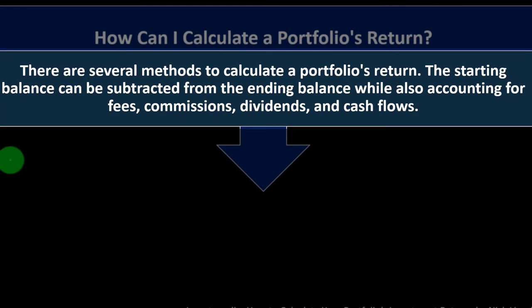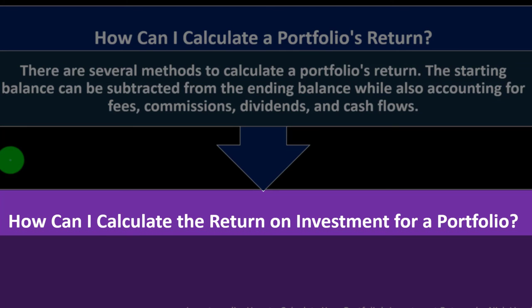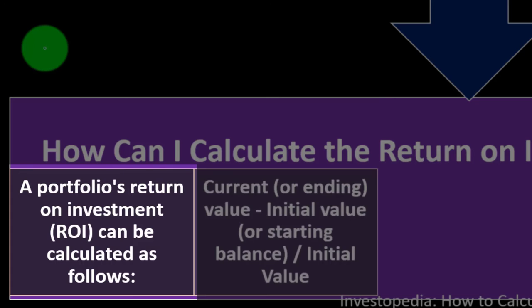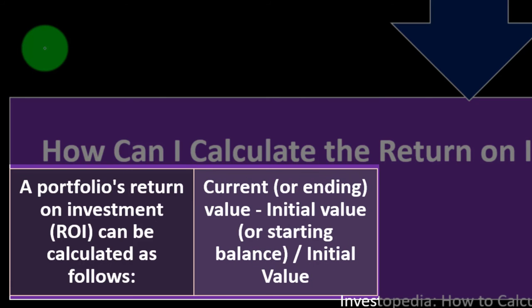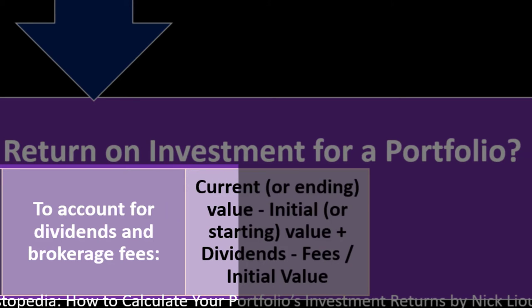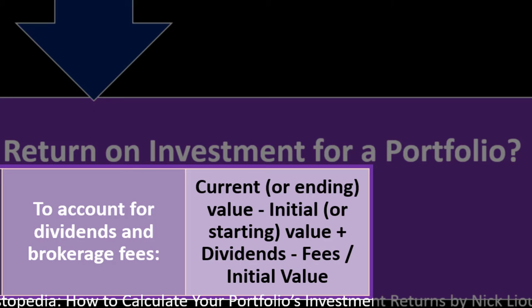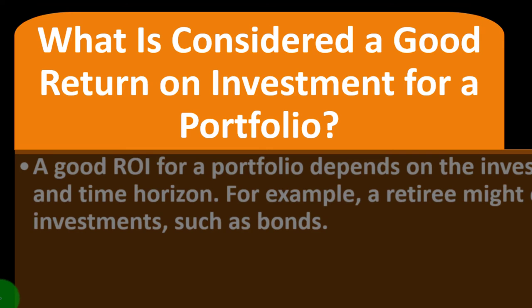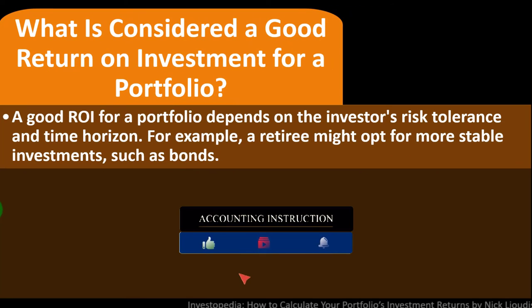How can I calculate a portfolio's return? There are several methods to calculate a portfolio's return. The starting balance can be subtracted from the ending balance while also accounting for fees, commissions, dividends, and cash flows. How can I calculate the return on investment for a portfolio? A portfolio's ROI can be calculated as follows: current or ending value minus initial value or starting balance, divided by the initial value. To account for dividends and brokerage fees: current or ending value minus initial or starting value plus dividends minus fees, divided by the initial value. Multiply the result by 100 to convert from a decimal to a percent.